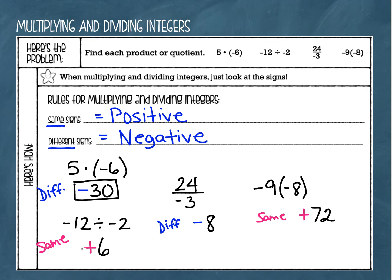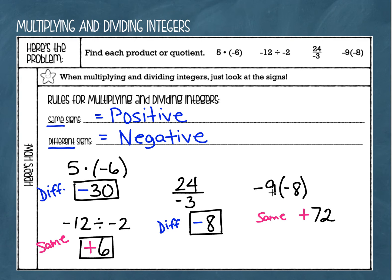My next example: negative 12 divided by negative 2 — those signs were the same, so my answer is positive 6. 24 divided by negative 3 — those signs are different, so my answer is negative 8. And finally, negative 9 times negative 8 — those signs are the same, both negative, so my answer is positive 72.